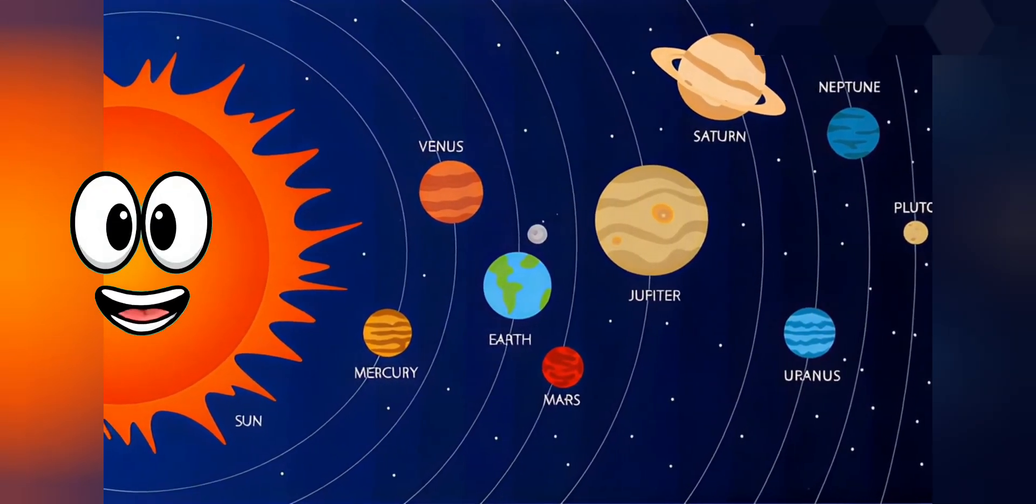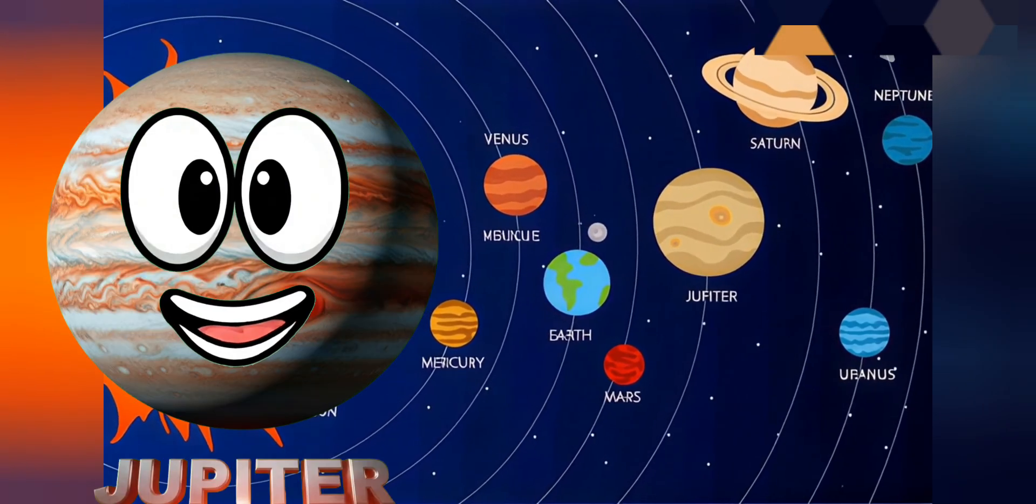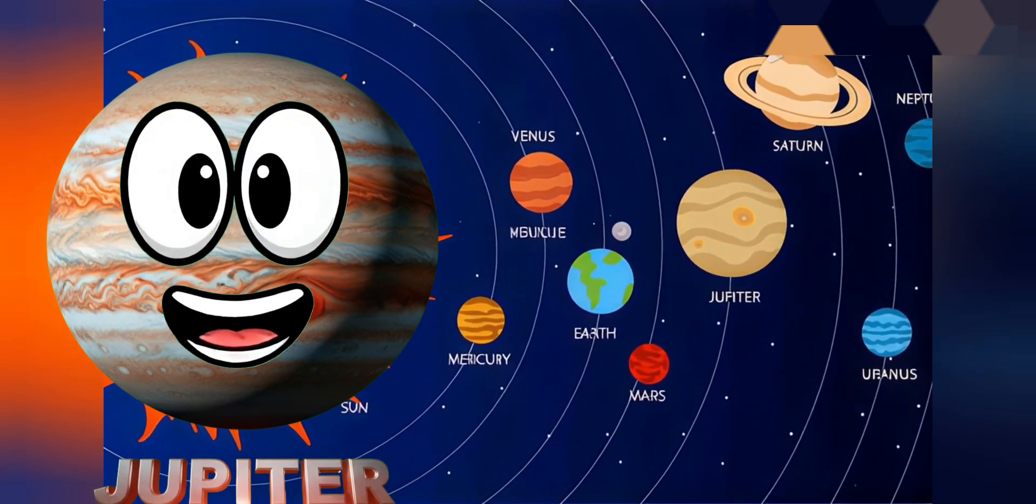Jupiter, Jupiter, Jupiter, where are you? Here I am, here I am, storms I brew. I'm Jupiter, planet five. Biggest of all, storms survive.